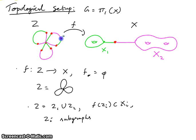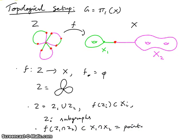Since f(Zi) is contained in Xi, note — and we'll use this a lot — f(Z1 ∩ Z2) is actually contained in X1 ∩ X2, which is a point. So this is the topological setup: we model a group homomorphism by a map of fundamental groups. We naturally take the free group as the wedge of circles, and for a free product we write it as the union of spaces with a point identified. That's what we have done schematically, and we have a color scheme for Z as well.